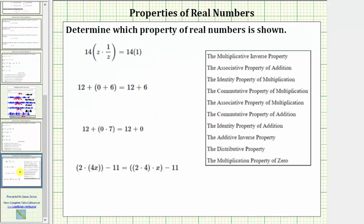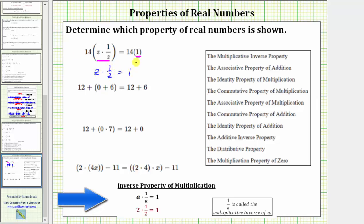Going back to our examples, we first need to analyze this first equation and determine what has changed from the left to the right. Notice how z times one over z on the left has been simplified to one on the right. Whenever we have a product equal to one, we are using the multiplicative inverse property, and we can say that one over z is the multiplicative inverse of z. It's also true that z and one over z are reciprocals. This illustrates the multiplicative inverse property.